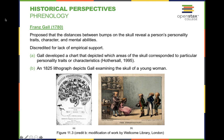Let's go through a little bit of history of personality perspectives. France Gall in 1780 created what's known as phrenology. Phrenology is considered pseudoscientific, and pseudoscience quite simply means fake science. He proposed that the distances between bumps on the skull reveal a person's personality traits, their character, as well as mental abilities. Over time, he was discredited for a lack of empirical support, because you can't just measure the distances between the bumps on your skull and examine one's personality adequately.